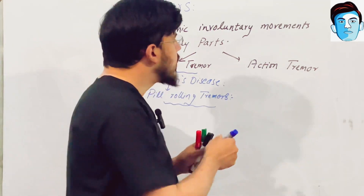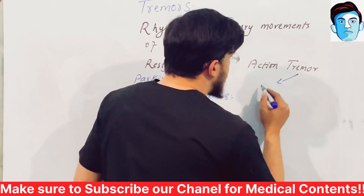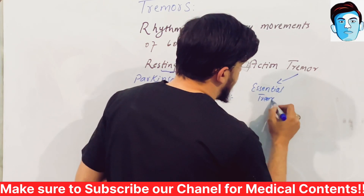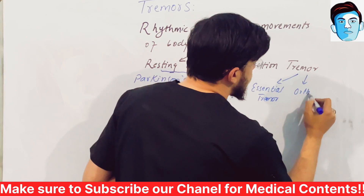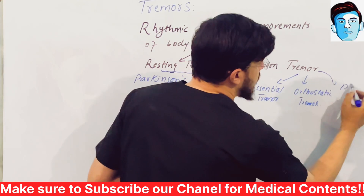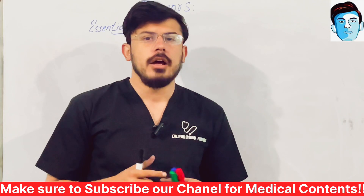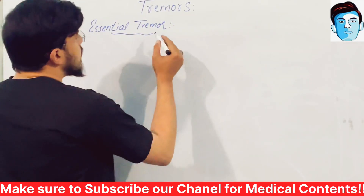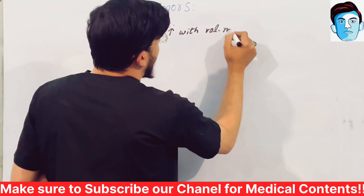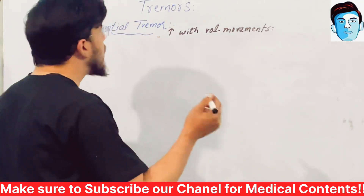In action tremors, it is further divided into three types: essential tremors, orthostatic tremors, and physiological tremors. The most common type of tremor is essential tremors. Essential tremors are increased with voluntary movements and decreased with rest. Essential tremors are high frequency in nature.